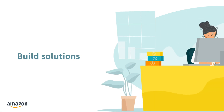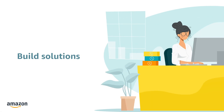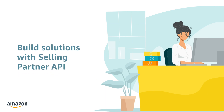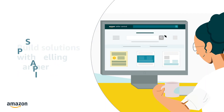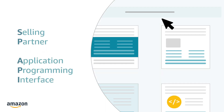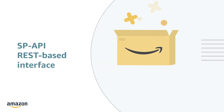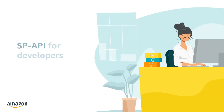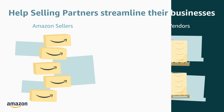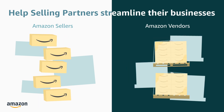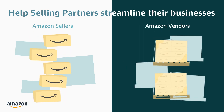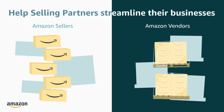Developers can build solutions for Amazon selling partners with the Selling Partner API. SPAPI is a REST-based programming interface for developers on Amazon. SPAPI apps can help Amazon selling partners streamline their businesses.